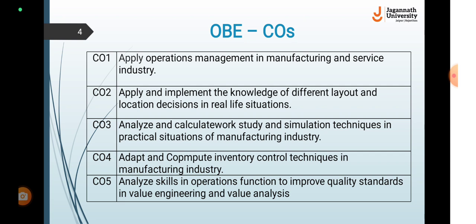In this outcome you will cover work study, method study, work measurement techniques, job design and Monte Carlo simulation. The next course outcome is to adapt and compute inventory control techniques in manufacturing industries, which will be achieved after studying inventory control techniques, networking techniques such as PERT and CPM, and project planning and control.